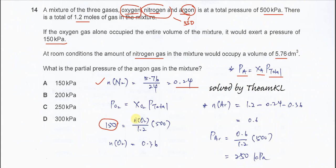Total moles is 1.2, times the total pressure of 500. Rearranging, we get the moles of oxygen from this equation.